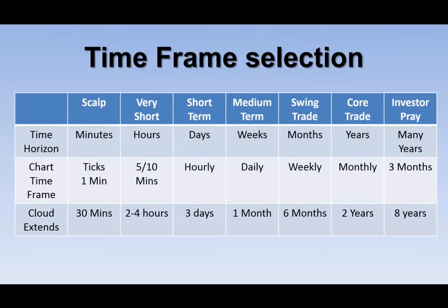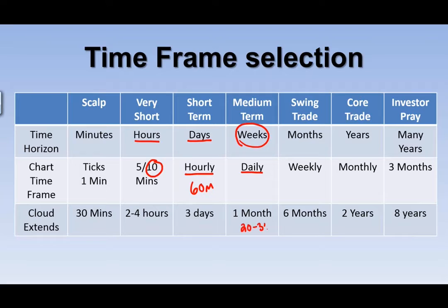First, figure out your time horizon. On a daily chart you're probably in a trade for two weeks or more. On an hourly (60-minute) chart, you're in for days. On a 10-minute chart, you're in for hours. The cloud extends 20–30 days on the daily, about 3 days on the hourly, and 2–4 hours on the 10-minute chart. Understand that looking at a daily chart means you'll be in that trade for weeks.